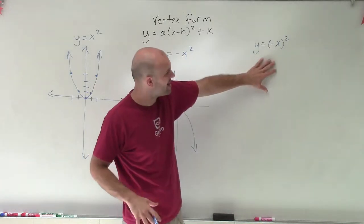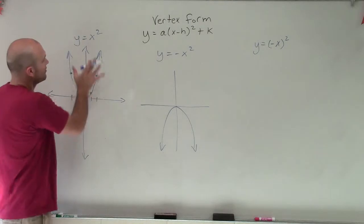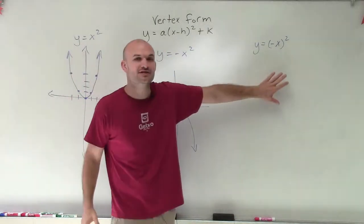So this graph is going to look exactly like my parent graph. But then you say, well, how does this look exactly like that? What is this transformation that's happening?